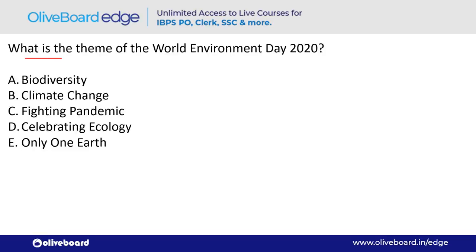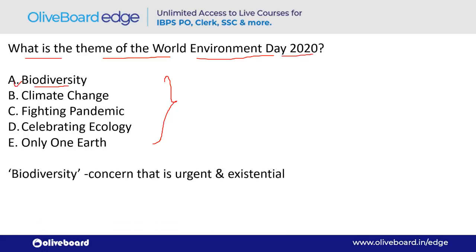First question: What is the theme of World Environment Day 2020? World Environment Day is observed every year on 5th June. The theme is 'Biodiversity' — the concern that is urgent and existential. Remember: 5th June is World Environment Day.